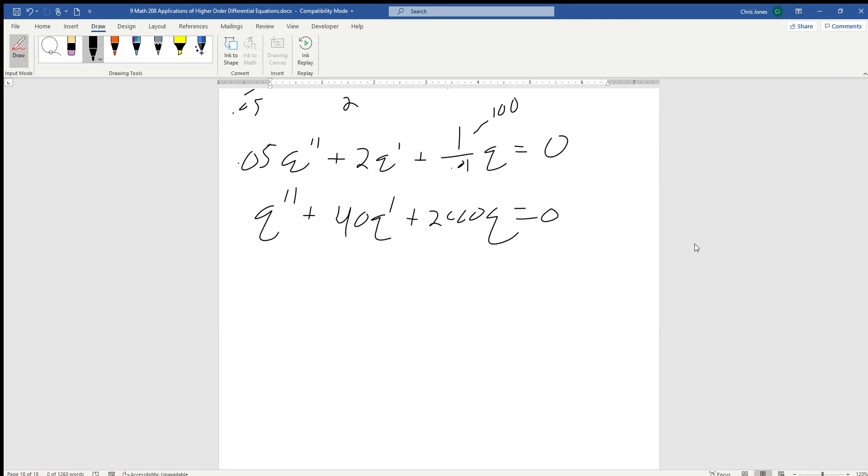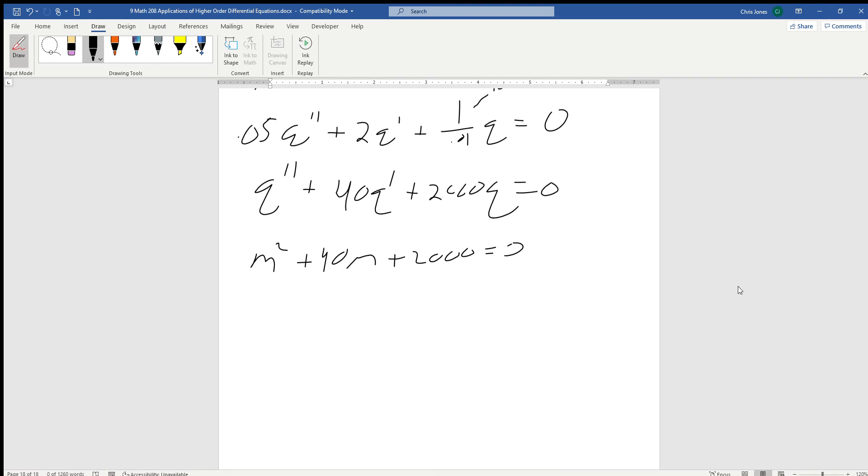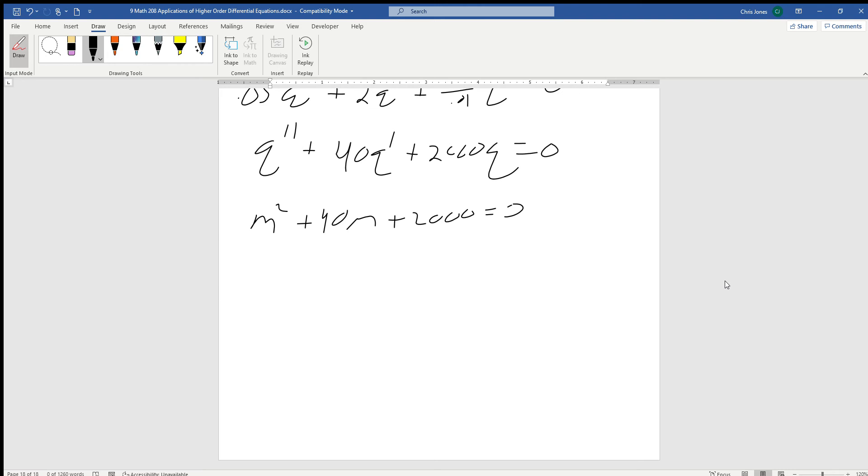We can get our characteristic equation: M squared plus 40M plus 2000 equals zero. I don't think that's very factorable, so let's use the quadratic formula. Negative 40 plus or minus the square root of 40 squared minus 4 times 1 times 2000 divided by 2 times 1. These are our values of M. That's negative 40. This looks like 1600 minus 8000, which is negative 6400. The square root of negative 6400 is plus or minus 80i divided by 2. We have a case 3 where M is negative 20 plus or minus 40i.